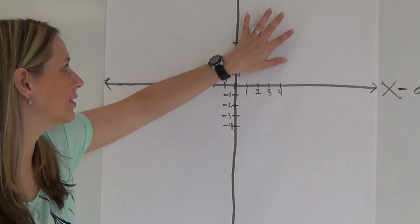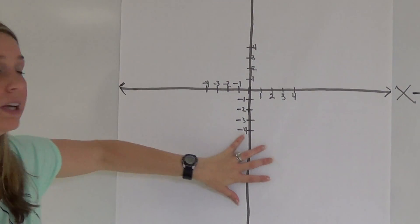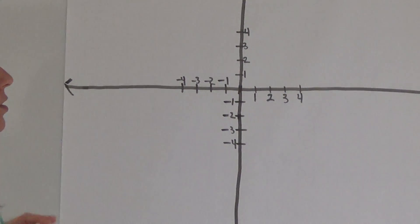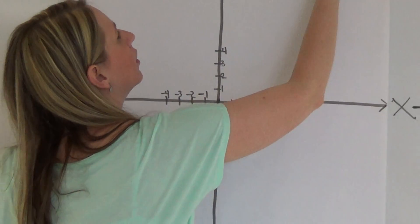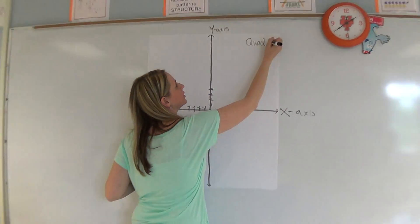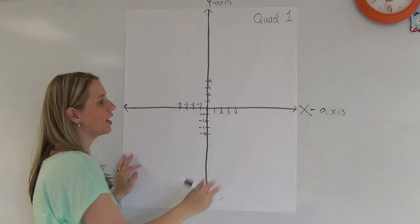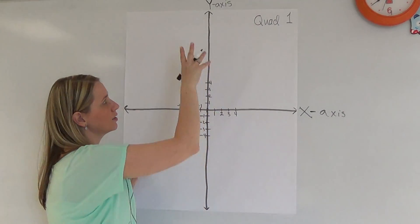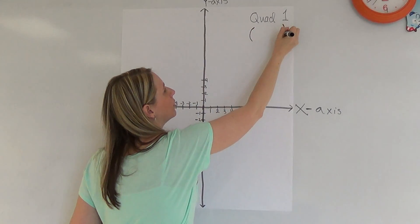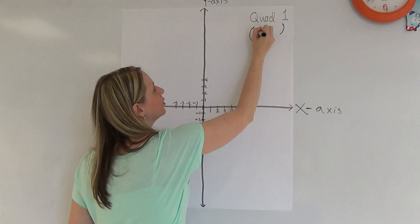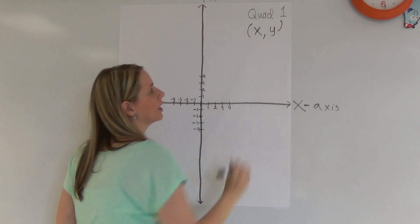What we have here is a coordinate plane. This is going to be our quadrant 1. In quadrant 1, we have an x-axis and a y-axis. And in quadrant 1, both your x and your y are going to be positive.